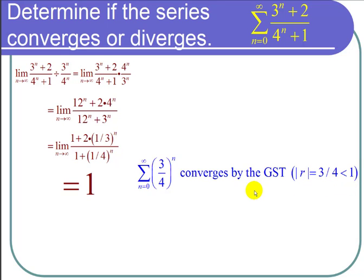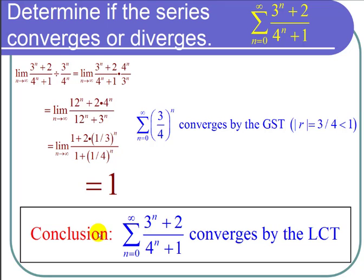Now I'm ready to state my final conclusion using the limit comparison test. Since the geometric series that we're comparing with converges and the ratio was a finite non-zero number, the limit comparison test tells us that our series converges also.